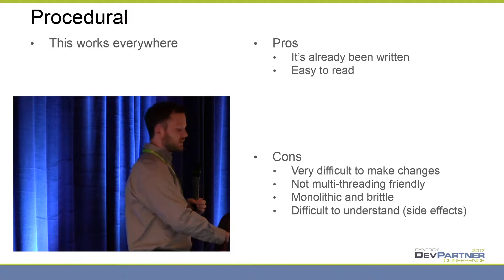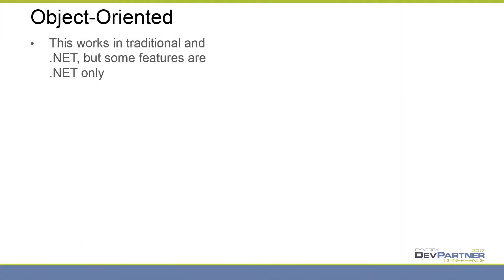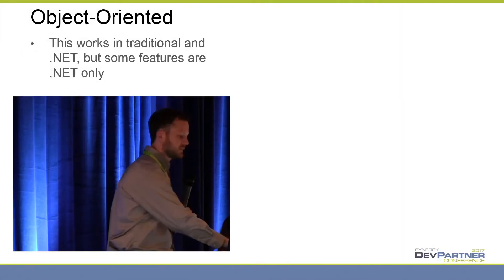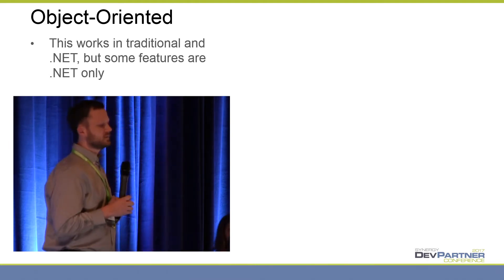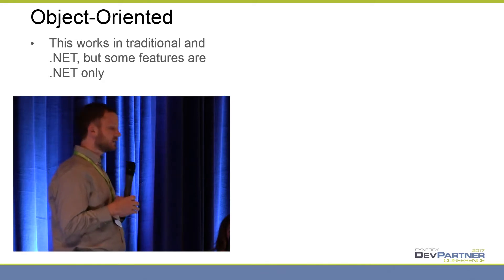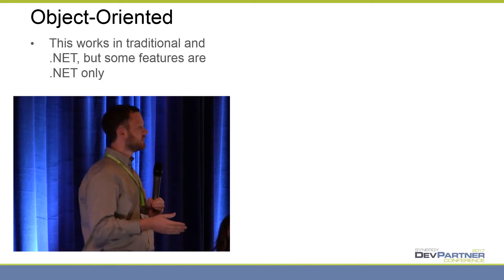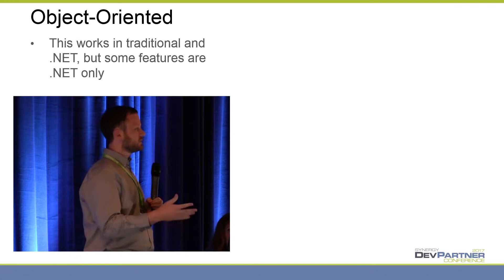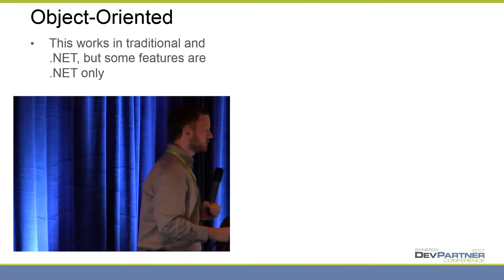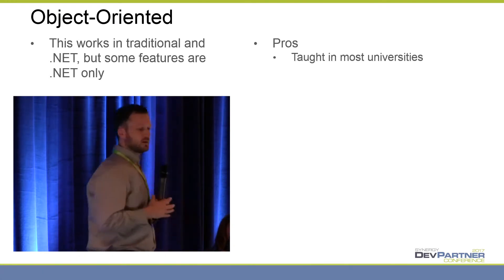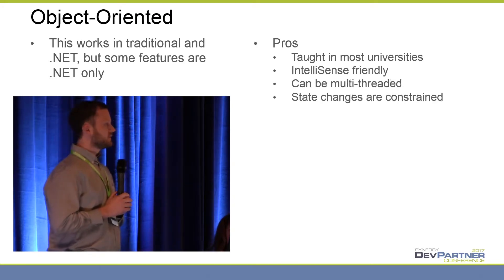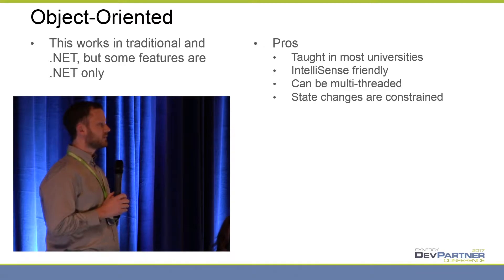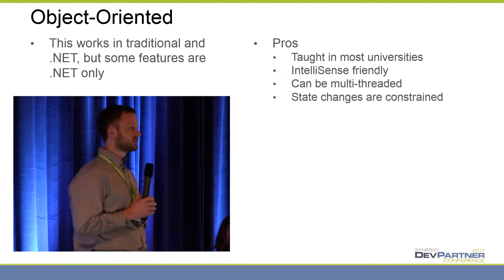So we've all seen procedural. We've all been hearing about object-oriented now for a while. This works in traditional and in .NET. There are a couple of features that are .NET only, but in general, object-oriented programming works very well in both platforms. There are some pros. It's taught in a lot of universities — if you hire someone new, they've probably heard the words object-oriented and understand the concept in general.